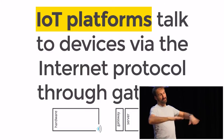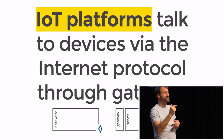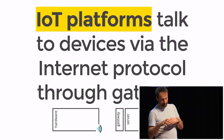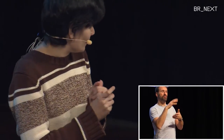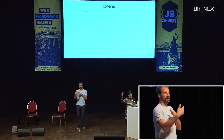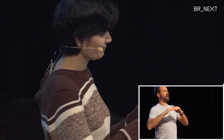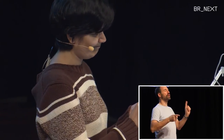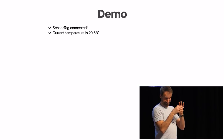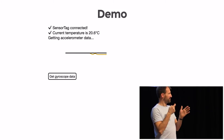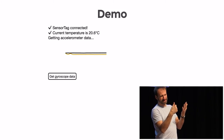IoT platforms use JavaScript running on the server through a gateway, talking to devices using internet protocol. In my hand I have a tiny hardware with wireless capabilities. The first step is to connect the sensor, the next step is to get sensor values — for example, temperature, which reads about 20.6 degrees — and the third step is to visualize the sensor data.